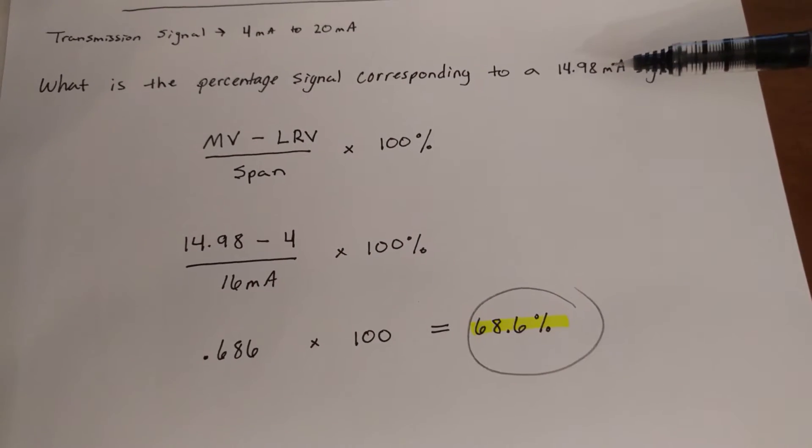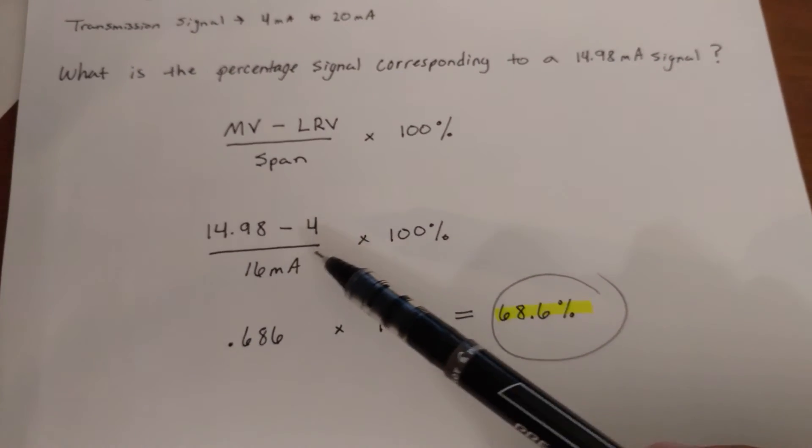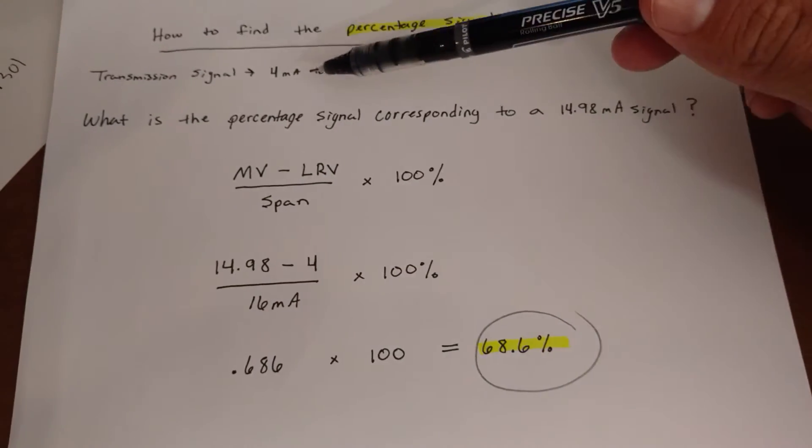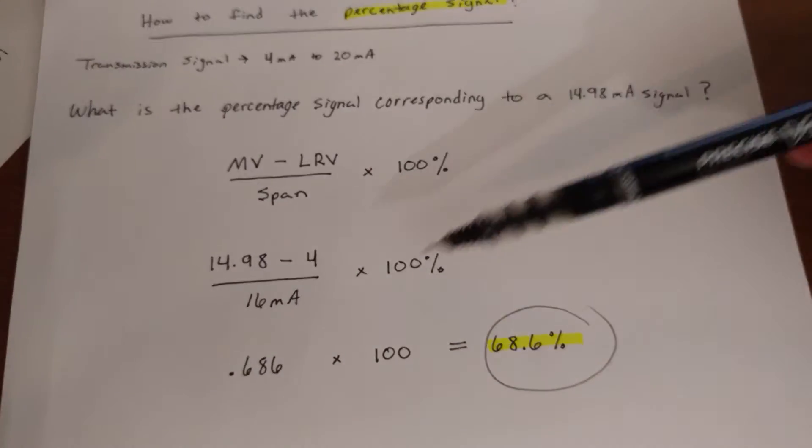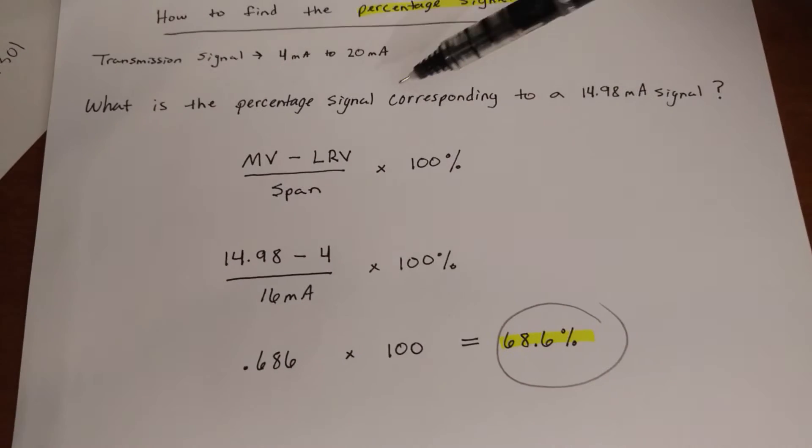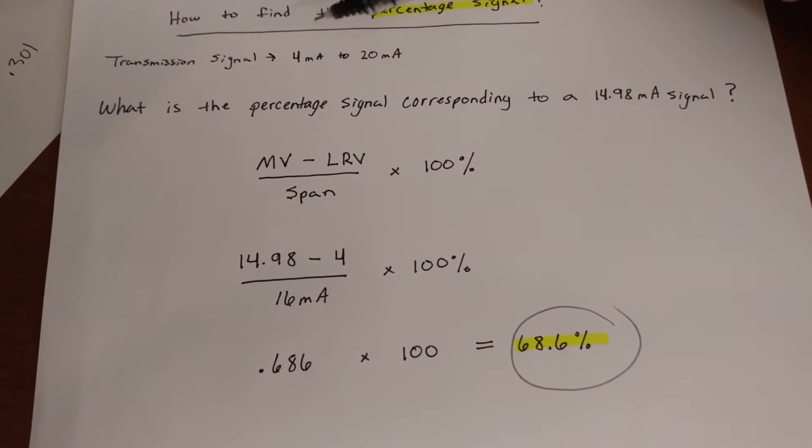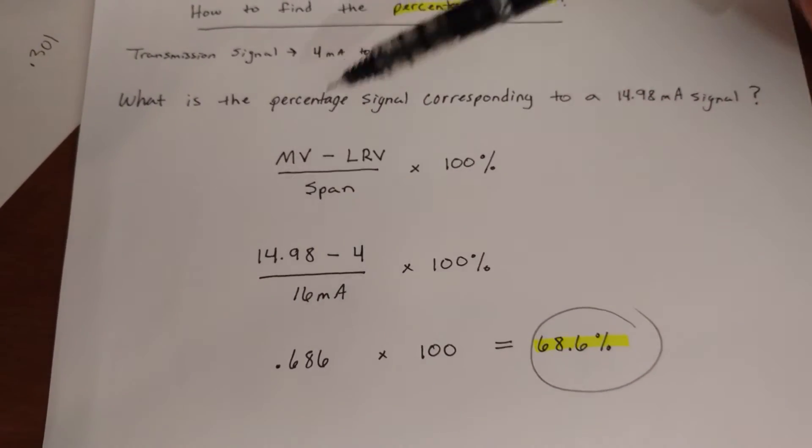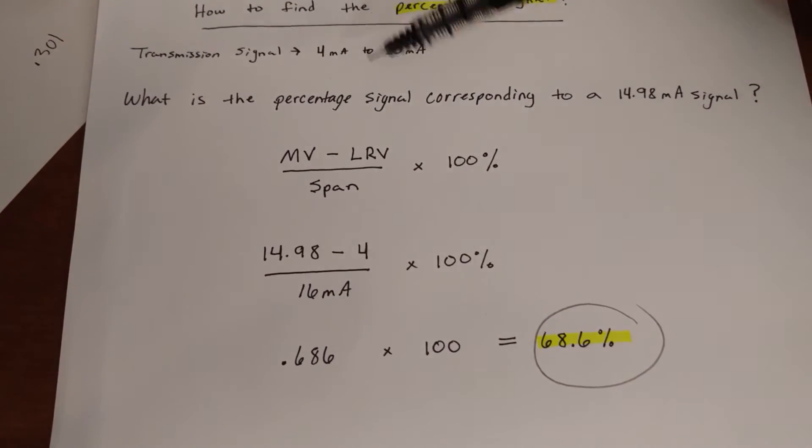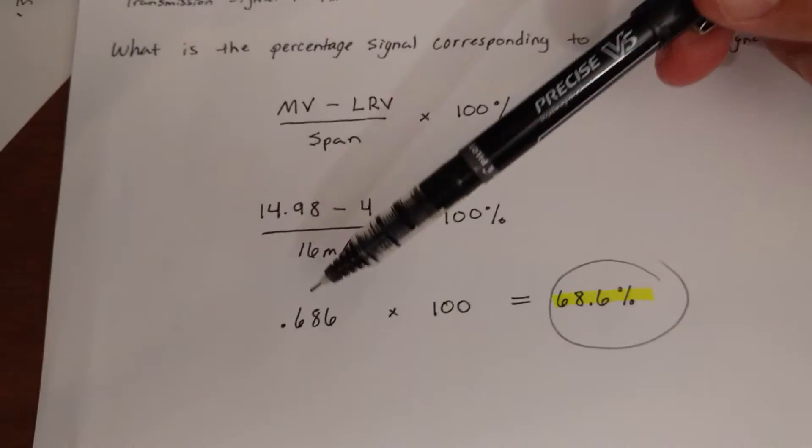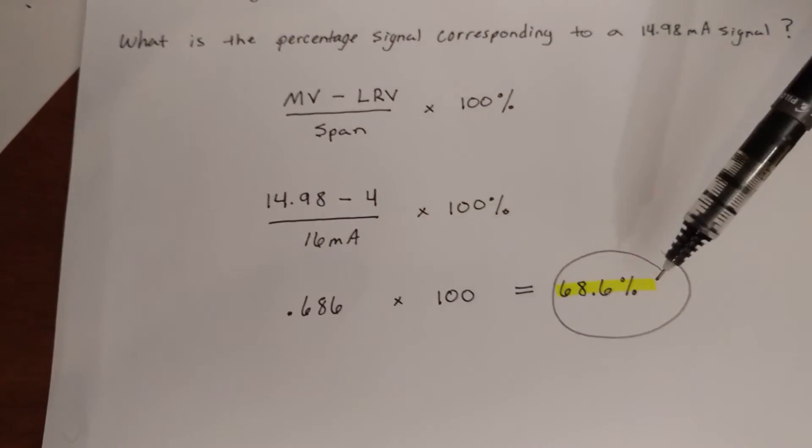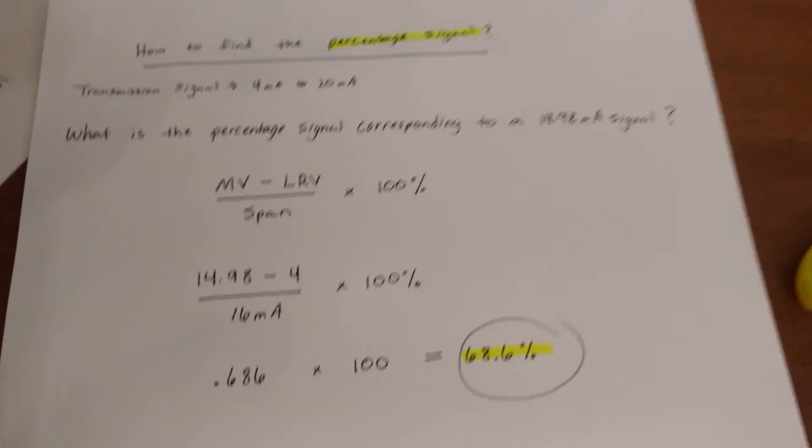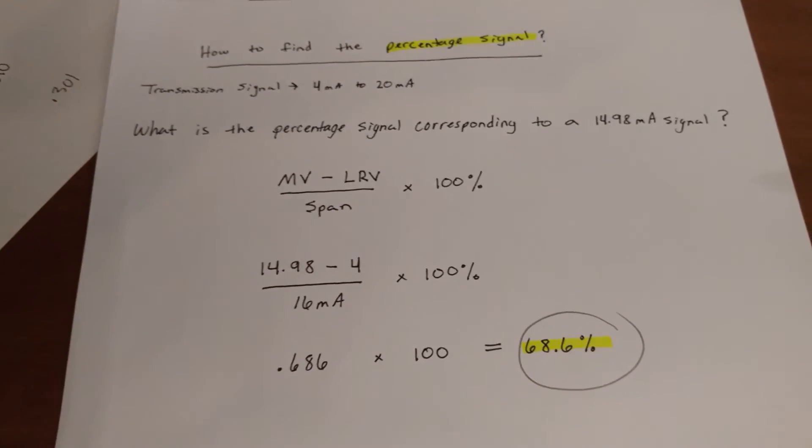So, that's right here, 14.98 minus your lower range value, 4, and then divided by your span, which is going to be the difference between your upper and your lower range value, which in this case is 16. So you're going to plug it in, 20 minus 4 is 16, times 100%, which is going to be .686 times 100%, 68.6%, and that is going to be your percentage signal.